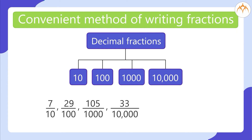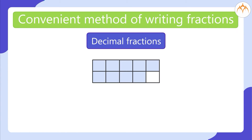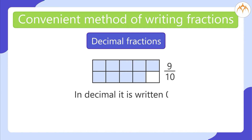These fractions have a numerator and denominator. How do we write the fraction of a shaded portion? It is 9 by 10. In decimal, it is written as 0.9.